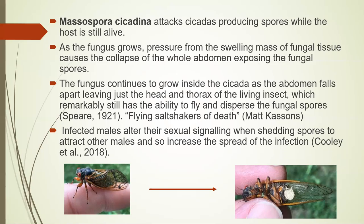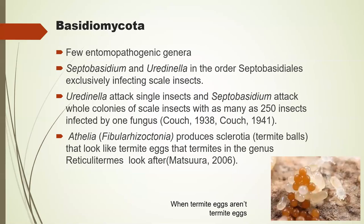Not only that, but Massospora also somehow makes the infected males hyperactive sexually — hypersexual — with no genitals left because they've all dropped off. They even do wing flicks which make them appear like females attracting males. So unsuspecting males come and try to mate with this thing that's covered in spores — essentially spreading death. That's Zygomycota — pretty horrible for insects.